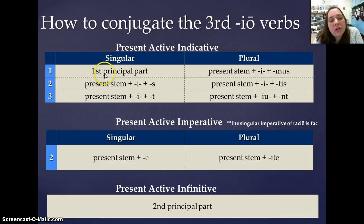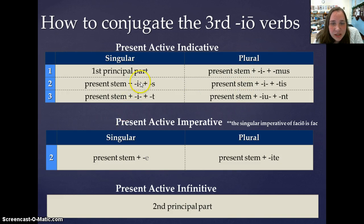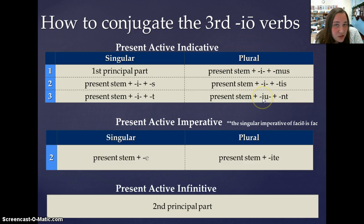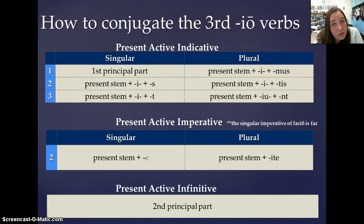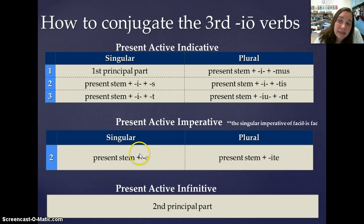As always, the First Principal Part is the First Person Singular Present Active Indicative. After that, you need your present stem. Just like with the Third Conjugation, you're going to add the I and the Personal Endings. The only difference is that instead of just adding a U in the Third Person Plural, you have to add an IU — so instead of a -gunt, it's going to be -cipiunt, as you'll see in a couple of slides. The Present Active Imperative has a present stem plus E, just like a regular Third Conjugation Verb. However, it is going to be different from a Fourth Conjugation ending in the Singular Imperative.